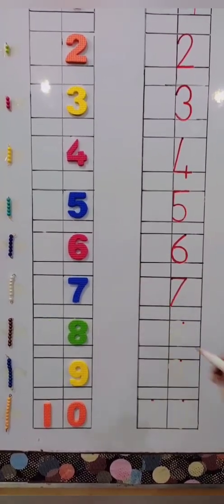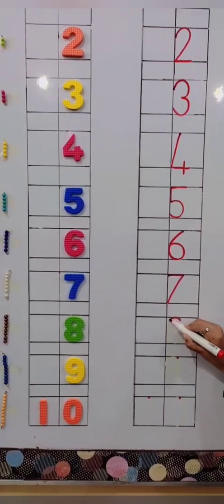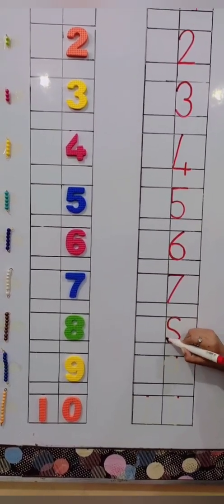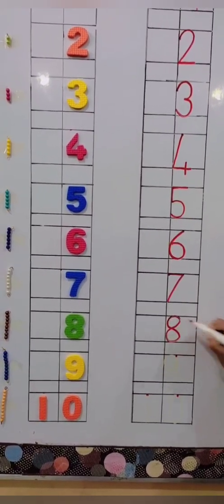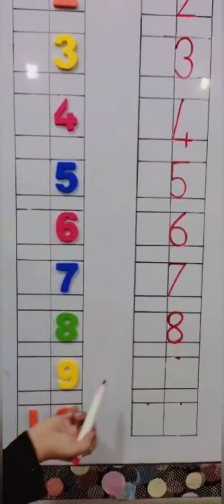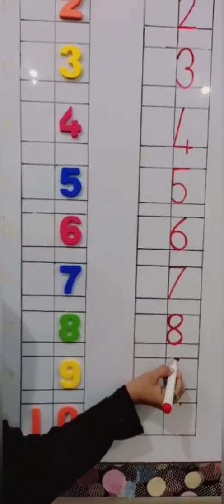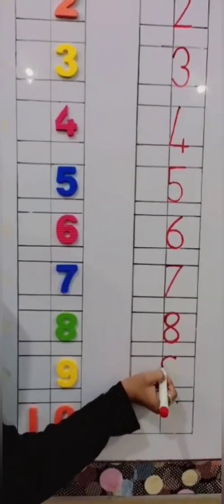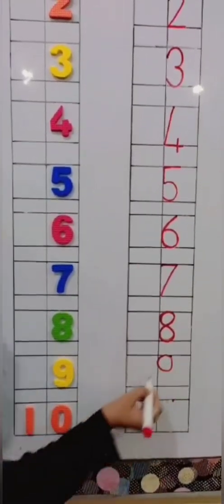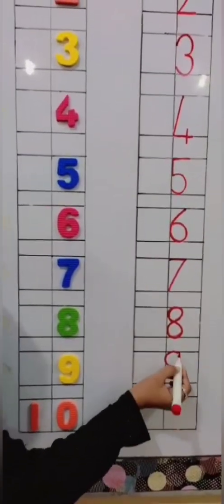8. 8 is like a figure — round and round. 9 is round and must come down.